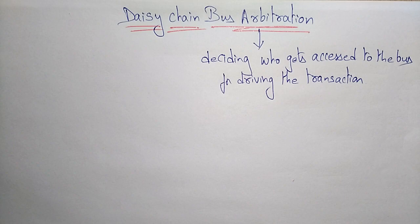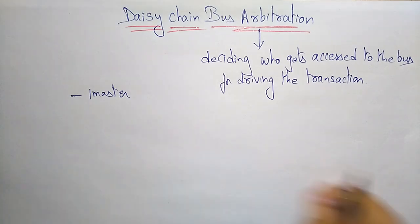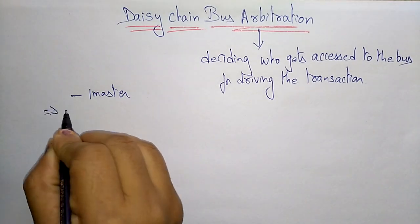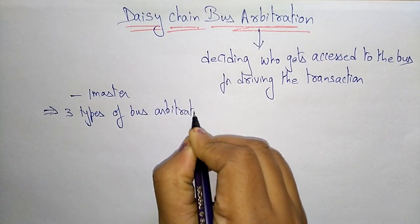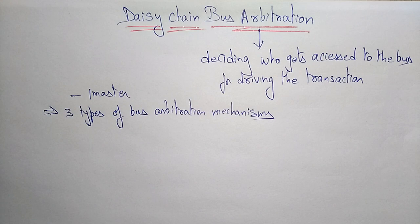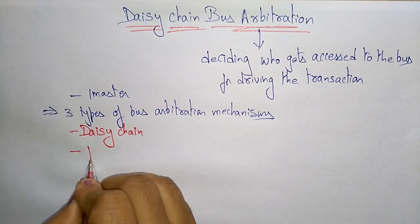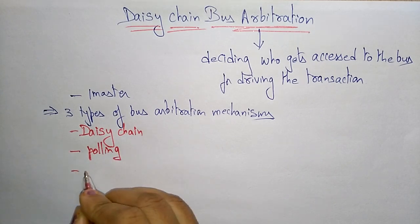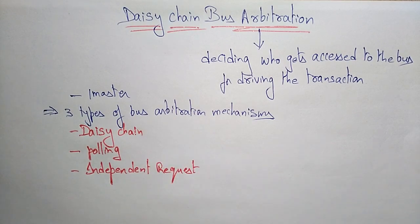In daisy chain bus arbitration, the bus master or controller decides which device will access the bus first. There is always only one master device per bus. The three types of bus arbitration mechanisms are: daisy chain, polling bus arbitration, and independent request.